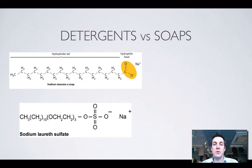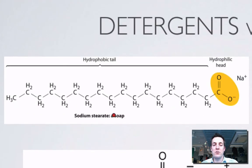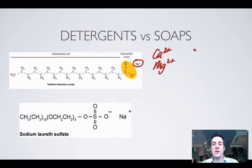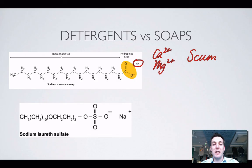Now let's look at the difference between detergents and soaps. This soap is called sodium stearate — sodium because it has a sodium ion, and stearate because the long molecule is called the stearate ion. We can again see the part that loves water and the part that hates water. The trouble with soap molecules is that when they encounter calcium and magnesium ions, which are commonly found in water supplies, they form insoluble compounds — precipitates called scum.